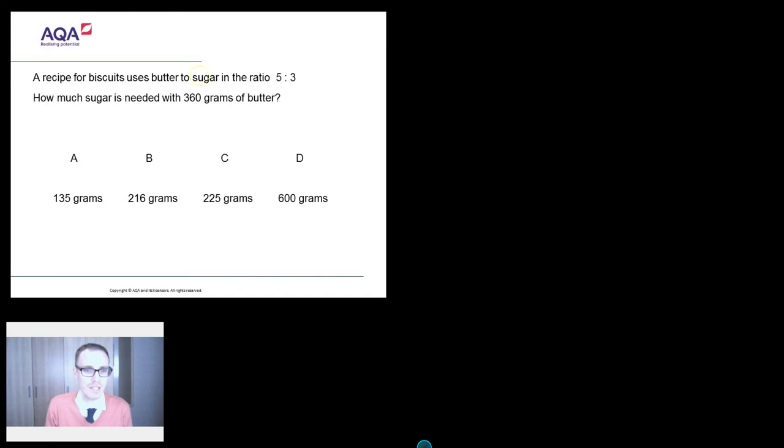Right, a recipe for biscuits uses butter to sugar in the ratio of 5 to 3. How much sugar is needed with 360 grams of butter?